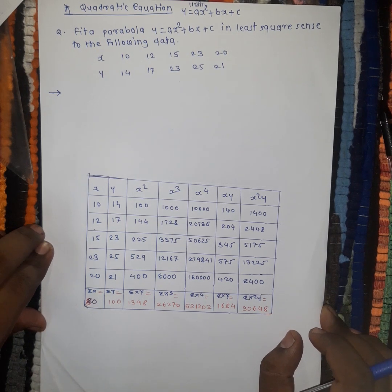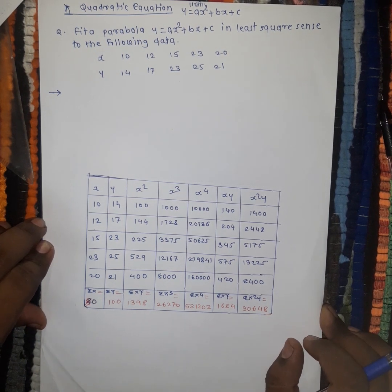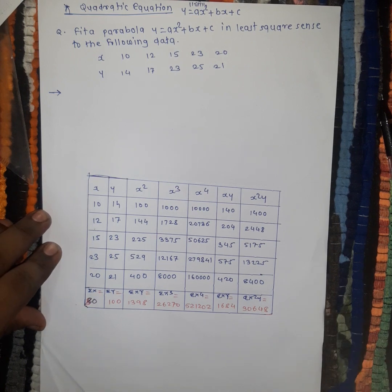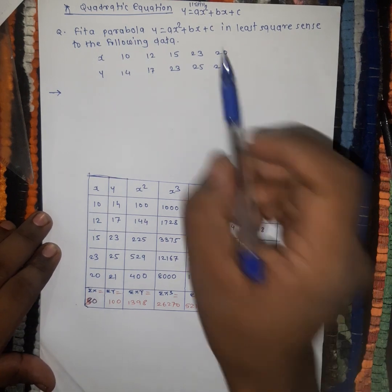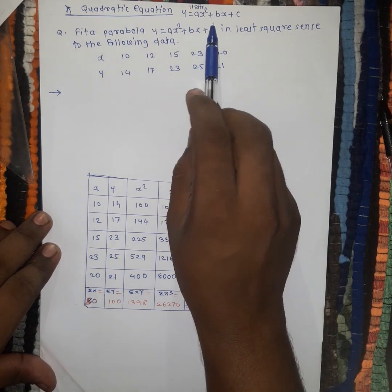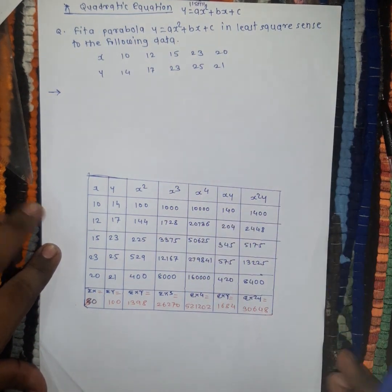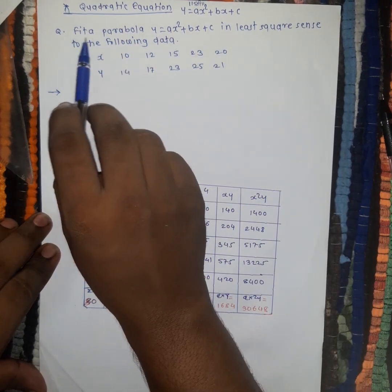Hello friends, today we are going to see one more topic from curve fitting — that is fitting of a quadratic equation of the form y is equal to ax squared plus bx plus c. So let's start with the example.